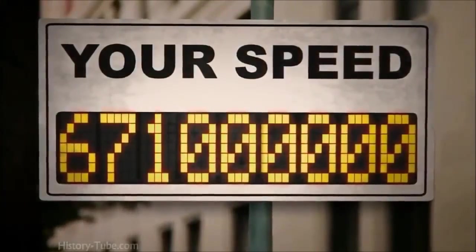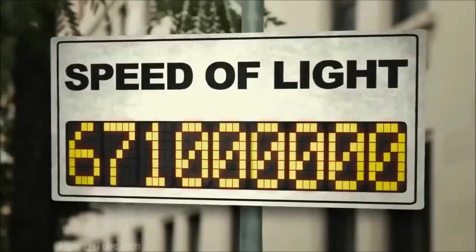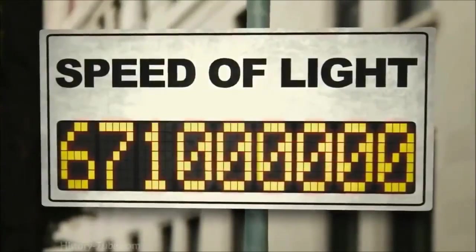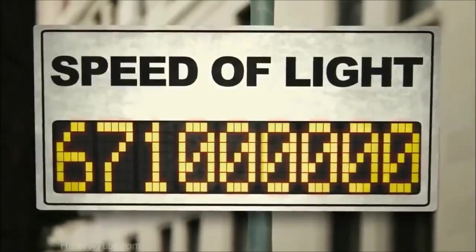But how could this be? How could all measurements of light speed always come out the same? If you're running at a wall, it's coming at you faster than if you're standing still with respect to that wall. But that's not true with light. The speed of light is the same for everybody. That's really extraordinary.